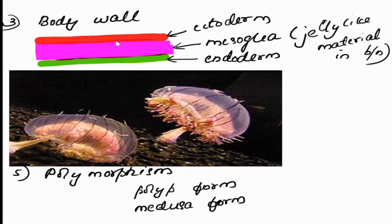About its body wall: the outer layer is called ectoderm, the inner layer is called endoderm, and in between the ectoderm and endoderm there is a jelly-like substance called mesoglea. This is a photo of one Cnidaria; we will learn about this later in the same sections.